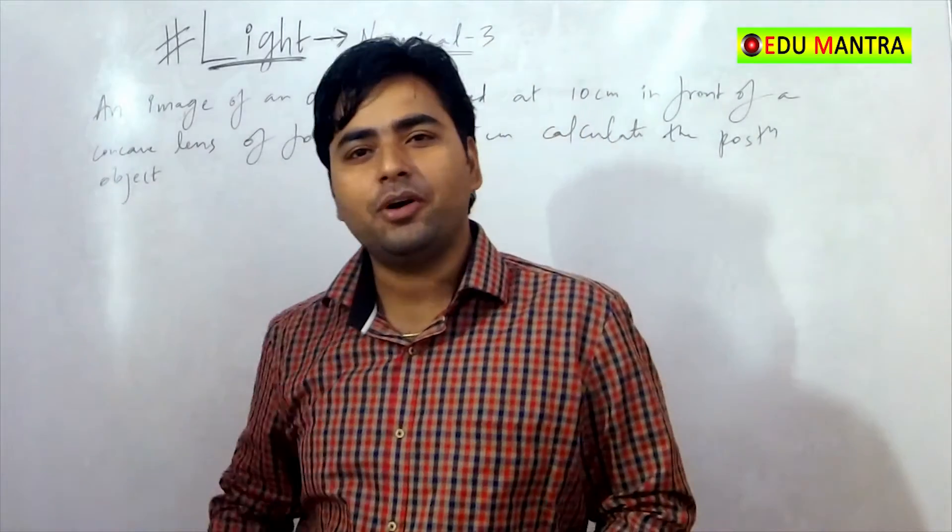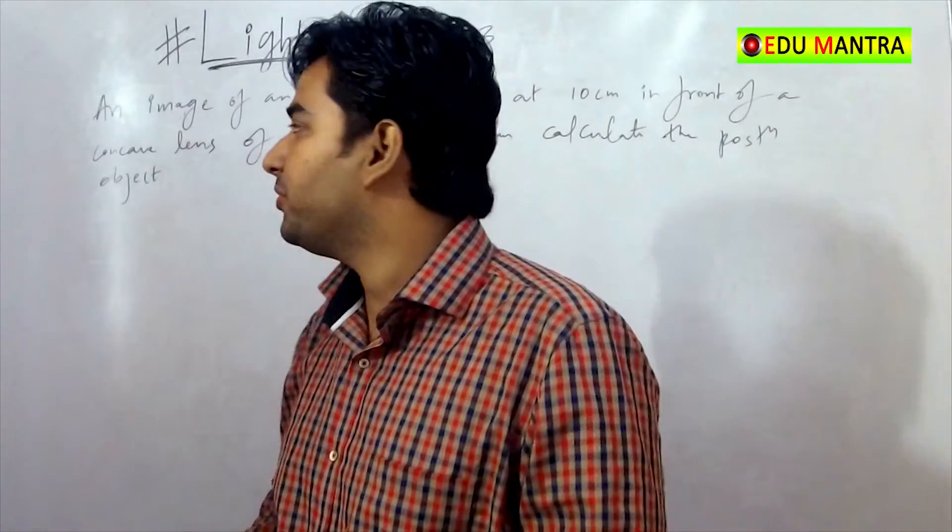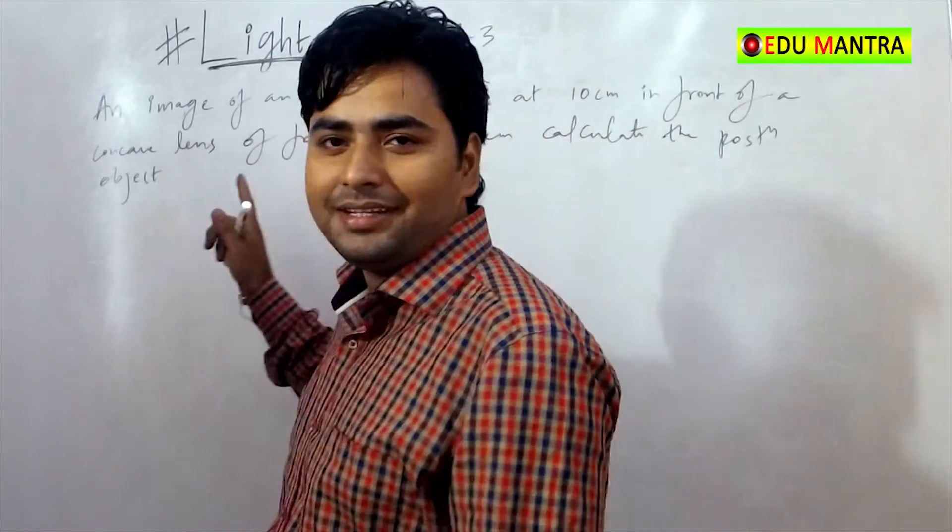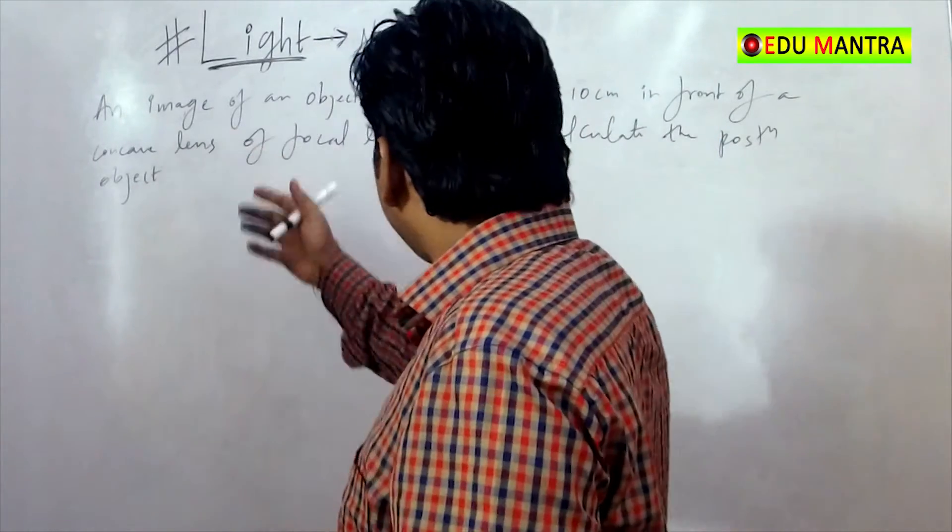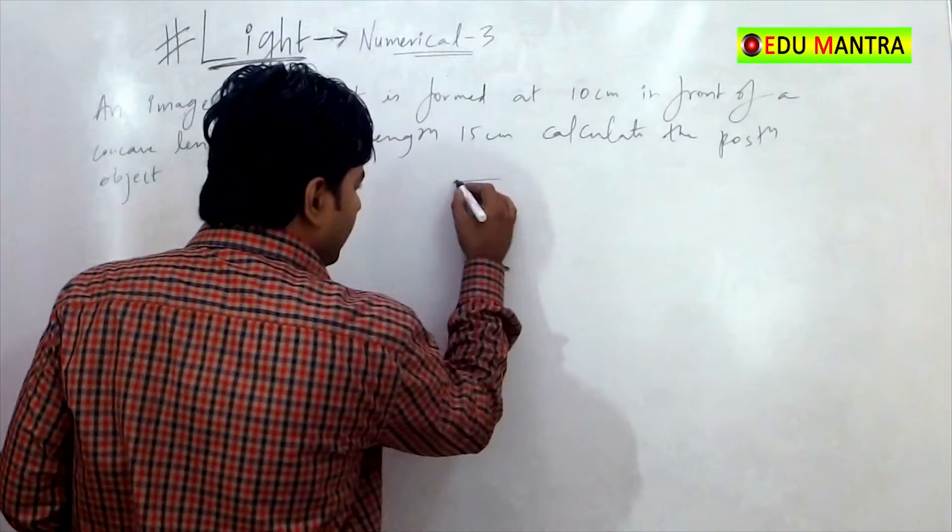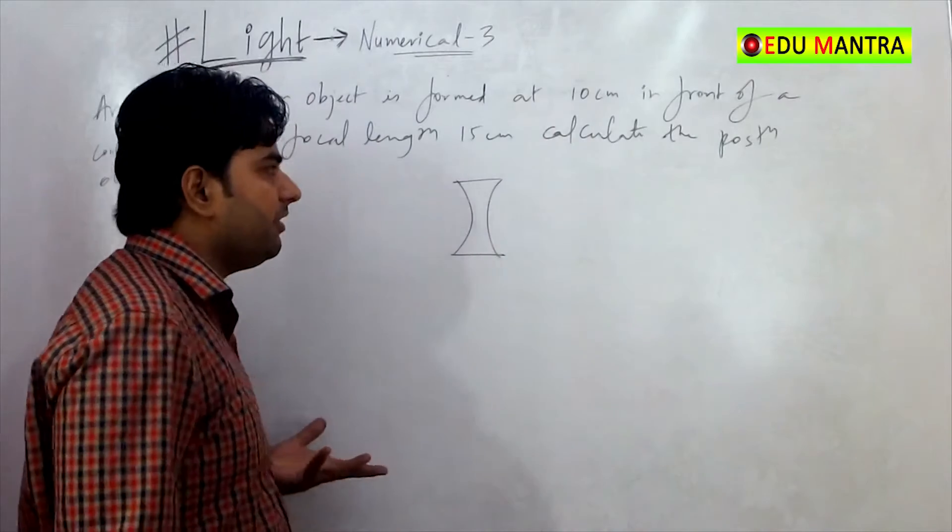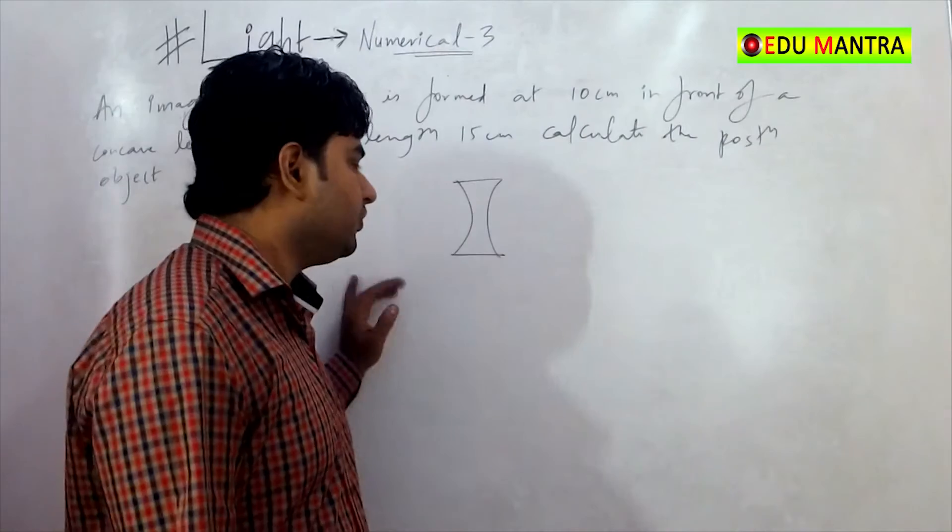Image is formed at a distance of 10 cm in front of a concave lens. We do have a concave lens right here. A focal length is 15 cm. F is the position of object. We need to find the object position U.